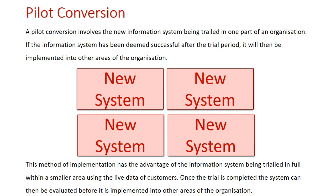To summarize, the four conversion methods are: direct, where the old system is immediately replaced by the new system; parallel, where both old and new systems run side by side for a period or longer; phased, where the old system is gradually replaced by the new system, with each individual part being individually trialed and tested before the next part is brought in; and pilot conversion, where the new system is trialed in full within a segment of the organization, and then after the trial period, it is spread to other parts of the organization if deemed a success.